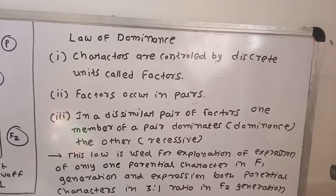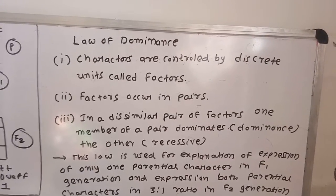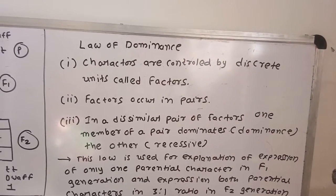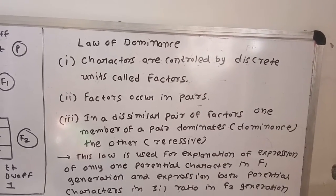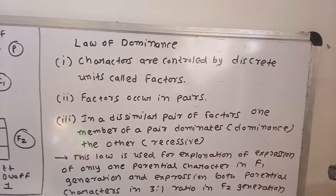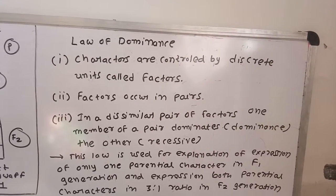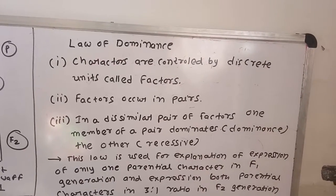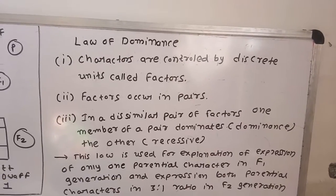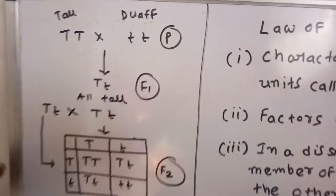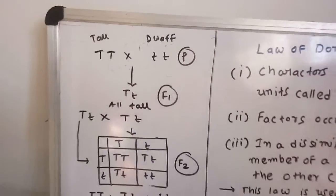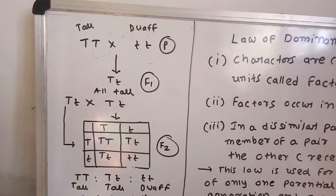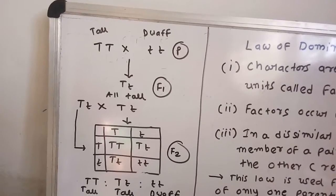We will start with the law of dominance. First point of the law of dominance: characters are controlled by discrete units called factors. Number two, factors are always present in pairs. Number three, in a dissimilar pair of factors, one member of a factor pair dominates — that is, shows dominance — over the other member, that is the recessive. Now we will use a short summarized form of a Punnett square to understand these three points. First point: characters are controlled by discrete units called factors.